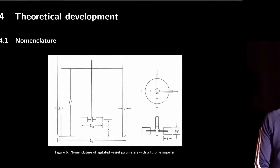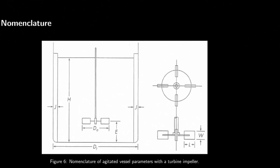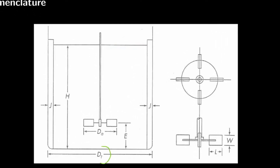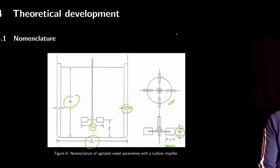Regarding nomenclature, we'll be consistently using the same notation used in most literature on mixing and agitation equipment. The diameter of the vessel is denoted by dt. The diameter of the impeller — meaning the distance between the edges of the impellers — is da. The clearance from the center of the impeller to the bottom of the tank is e. j is the width of the baffles, h is the level of fluid in the tank, and for the impeller itself, length is l and width is w. This is the four-blade turbine impeller; you can see the top view showing four blades.